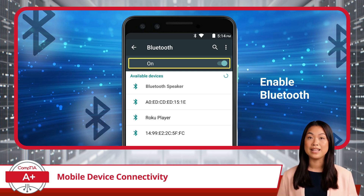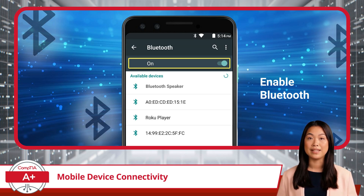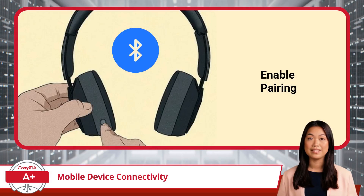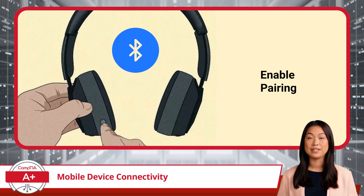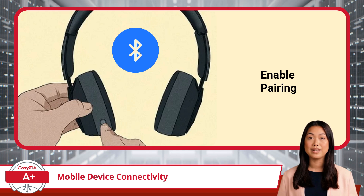Pairing is the process of establishing a secure wireless connection between two Bluetooth-enabled devices so they can communicate with each other. This pairing process starts by enabling Bluetooth connections in the settings menu of your mobile device. Once your Bluetooth antenna is enabled and connections are allowed, the next step begins with placing the Bluetooth device you want to connect with into pairing mode. This is usually done by holding a button on the device, such as a long press on the power button of Bluetooth headphones.